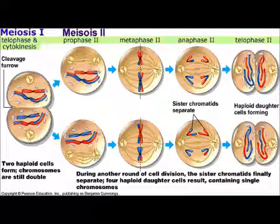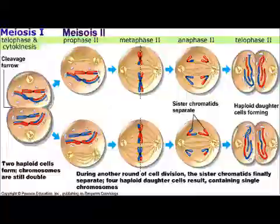Anaphase II begins as each chromosome is pulled apart into two chromatids by the microtubules of the spindle apparatus. The chromatids, now chromosomes, migrate to their respective poles. In telophase II, the nuclear envelope reappears at each pole when cytokinesis occurs. The end result of meiosis is four haploid cells. Each cell contains half the number of chromosomes, and each chromosome consists of only one chromatid.